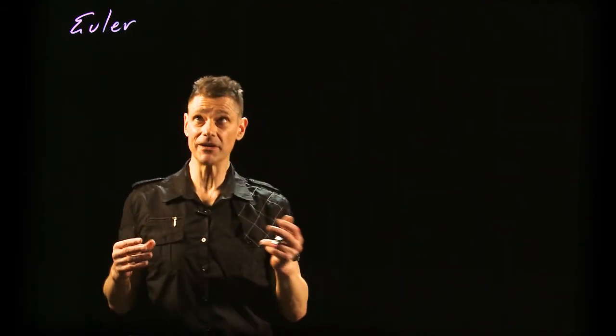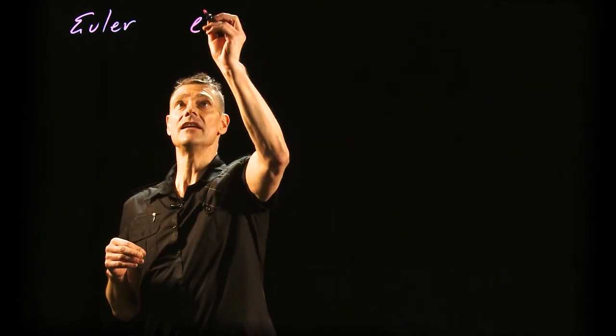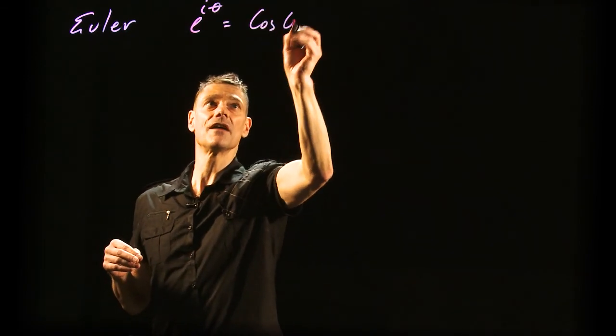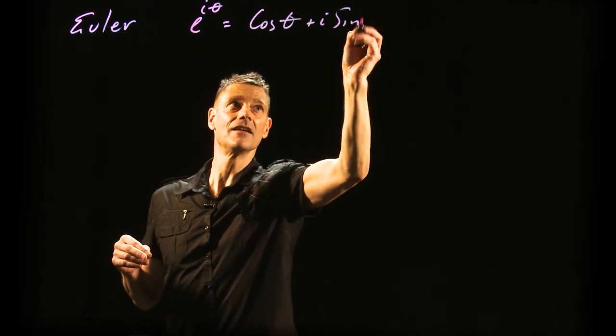Now we're going to tie in trigonometry in the complex plane with one of the most beautiful and elegant equations mathematicians have ever seen. I don't know if regular people get all mushy about this, but we do. Euler's formula: e^(iθ) = cos(θ) + i·sin(θ).